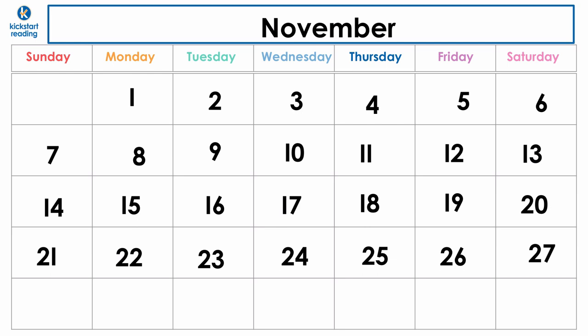We're going to go down to the last row. We're going to write number 28. 29. And we have one more number to write. November has 30 days. So write the number 30. You're all done. You filled out the entire November calendar. Awesome job.